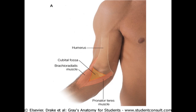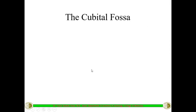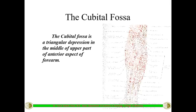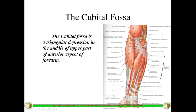This is the cubital fossa — a triangular depression present at the junction between the arm and the forearm, or in the upper part of the anterior aspect of the forearm, at the side of the elbow joint, in front of the elbow joint.